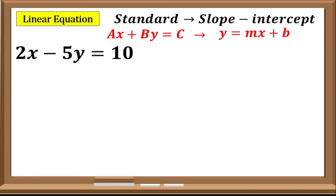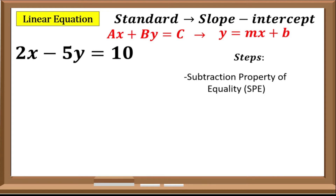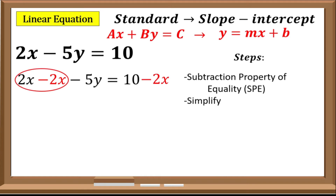As you can observe, the slope-intercept form is arranged in a manner where the y with the numerical coefficient of 1 is located on the left side of the equation. So we will be transferring the term with the variable x. To do that, we will be using the subtraction property of equality. This property aims to eliminate a term and transfer it to the other side of the equation. We need to transfer the 2x to the right side, so we will be subtracting 2x from both sides. Then simplify — 2x will be eliminated. We have negative 5y equals 10 minus 2x.